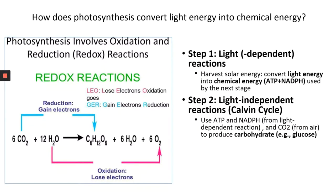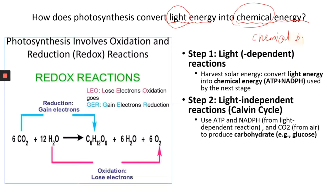How does photosynthesis convert light energy into chemical energy? Plants, algae, or cyanobacteria convert one form of energy to another that they can actually use — converting light energy into chemical energy. Chemical energy refers to the energy stored in chemical bonds. It is temporarily stored in chemical bonds, and when you break those bonds, you release the energy for other cellular activities. There are two steps involved in photosynthesis.